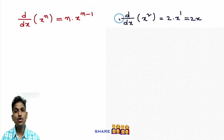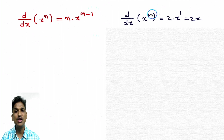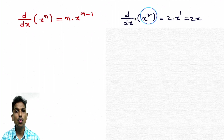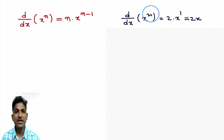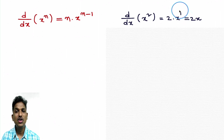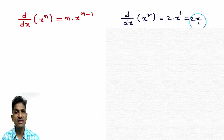You may find a question like d/dx of x square. Here x is the variable and 2 is the fixed number, so this is of the form d/dx of x power n. Applying the formula: derivative of x square — first write 2, then 2 into x power 2 minus 1, which is 1. So derivative of x square is 2x.